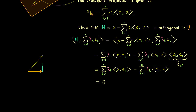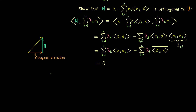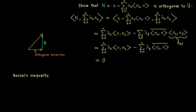Looking at the picture from the side, the length of the orthogonal projection is smaller than the length of the original vector x — more precisely, the norm of the orthogonal projection cannot be bigger than the original norm of x. Combining this with the projection formula gives us Bessel's inequality. This is not a new result, but the power lies in the generality: Bessel's inequality holds in any inner product space and for any ONS in it.